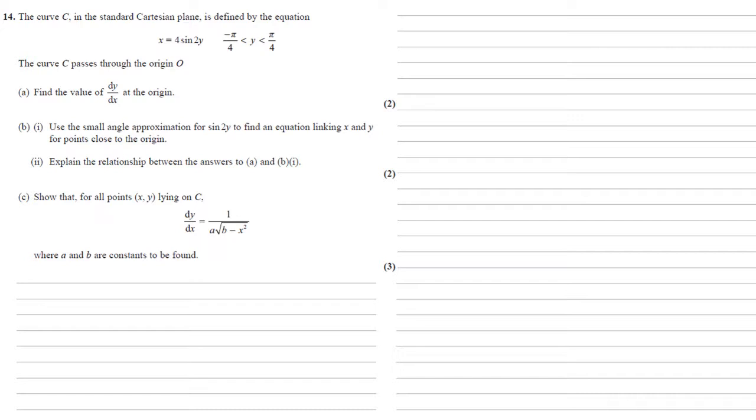For part c, we need to show that for all points (x,y) lying on C, that dy by dx equals 1 over a times square root of b minus x squared, where a and b are constants to be found. Well, we've already worked out that dy by dx equals 1 over 8 cos 2y.